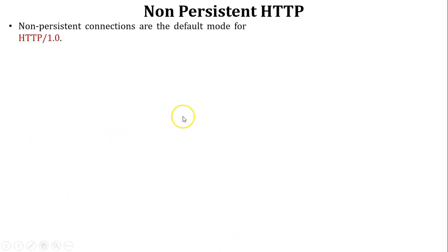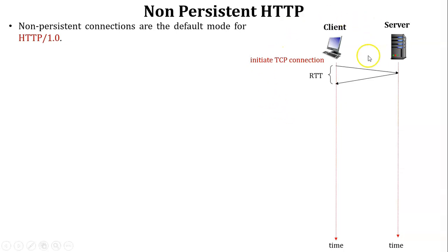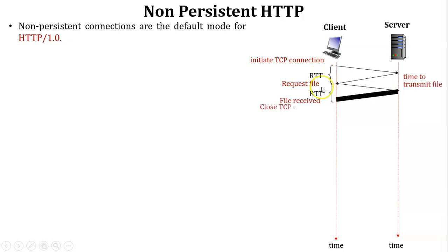Now let us discuss non-persistent HTTP. The default mode of non-persistent HTTP is HTTP 1.0. The client sends a TCP connection request to the server, and the server accepts — this uses one RTT. Then the client sends a file request and the server sends a response — this uses another RTT. So two RTTs are used in total, and then the TCP connection is closed.